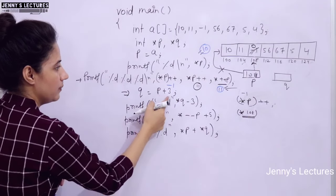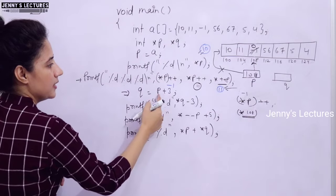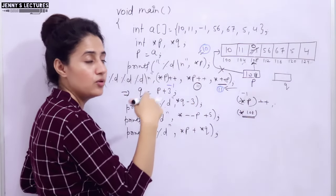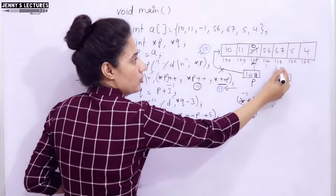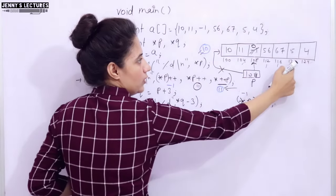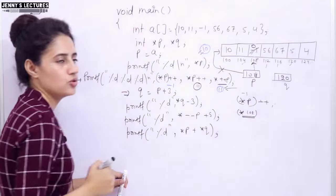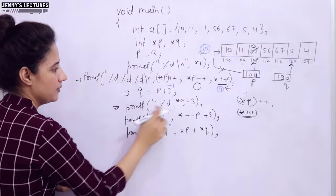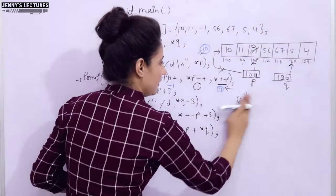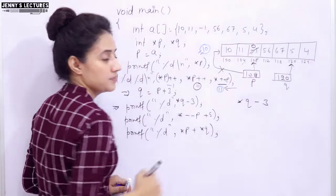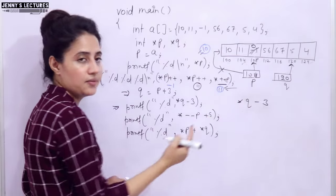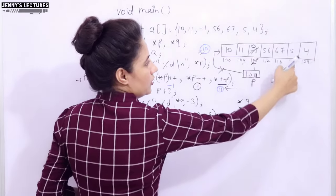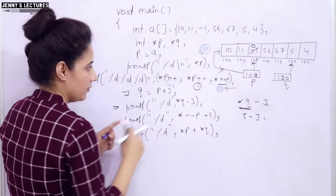Next, Q = P + 3. P is at 108, so P plus 3 in pointer arithmetic means moving forward 3 positions: 108, 112, 116, 120. So Q now stores address 120 and is pointing to that element. Then we print *Q - 3. Asterisk has higher precedence than subtraction, so *Q is evaluated first — value at 120 is 5. Then 5 minus 3 gives you 2.